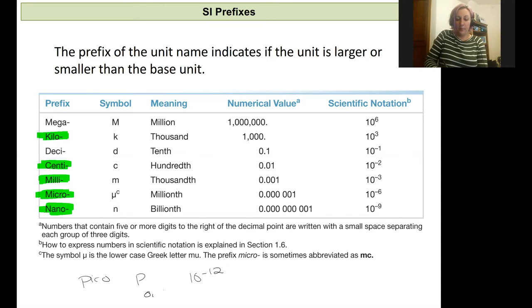So it would be zero point, I'm putting down four sets of zeros. So that would be like a picometer. These prefixes will go before our base unit.